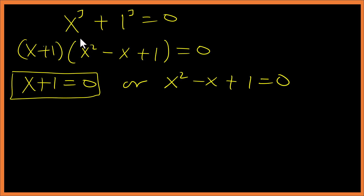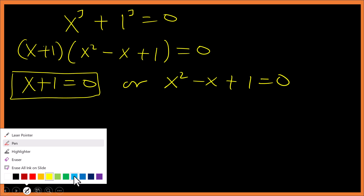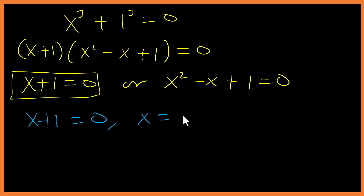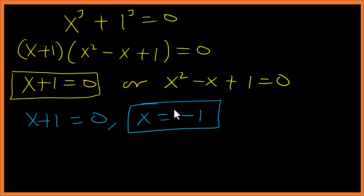From the first factor, we get our first solution. Since the degree is three, we need three solutions total. From x plus one equals zero, we get x equals negative one. That is our first solution.